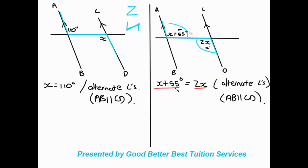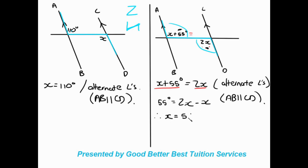Now we solve for x. We get x's together and constants together. Since the bigger x is on the right-hand side, we keep it there: 55 degrees is equal to 2x minus x, because that x comes over and becomes negative. Therefore x is equal to 55 degrees. So that example is done.